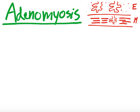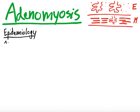For adenomyosis, let's talk about epidemiology. Epidemiology here is tough, because the definitive diagnosis is made only after hysterectomy. So it's really hard to say what the incidence is, since not all patients get hysterectomies. It's estimated to be around 20%, but it's been found in 40% to 65% of hysterectomy samples that have been carefully examined.